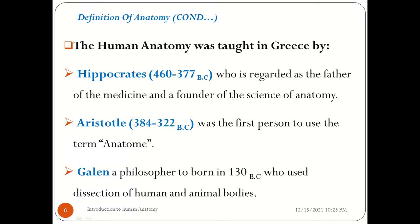Another important scientist is Galen, a philosopher born in 130 BC, who used dissection of human and animal bodies to study human anatomy. He dissected animals like goats and sheep, separating different structures to study them, and also studied various human structures.